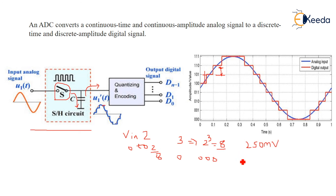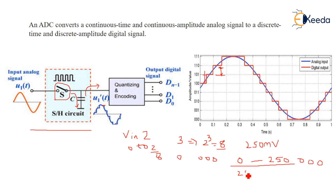So any input V_in between 0 and 250 millivolts will give a digital output of 000. If the input is above 250 millivolts, the next step range is 250 to 500 millivolts, which gives digital output 001. Any value falling between those two ranges will give digital output 001. Thank you, students.